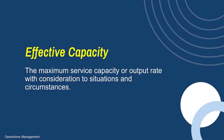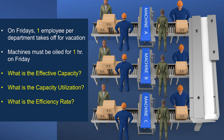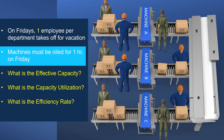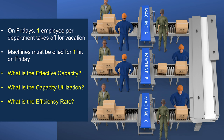Now, effective capacity is the maximum amount achievable under a given set of circumstances — we don't live in a perfect world. Even though we're designed to produce 4,800 units, that will probably never happen. Let's add some situational variables: on Fridays, one employee in each department takes off for vacation, and on Fridays machines have to be oiled for one hour. What is the effective capacity?